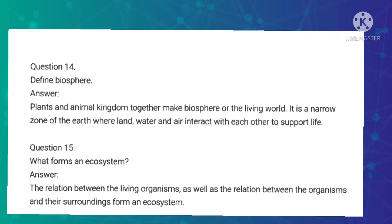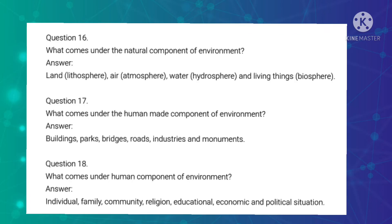Fifteenth question: What forms an ecosystem? Answer: The relation between living organisms as well as the relation between the organisms and their surroundings forms an ecosystem. Sixteenth question: What comes under the natural components of environment? Answer: Land (lithosphere), air (atmosphere), water (hydrosphere) and living things (biosphere).